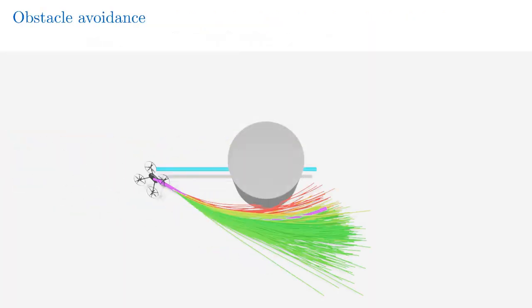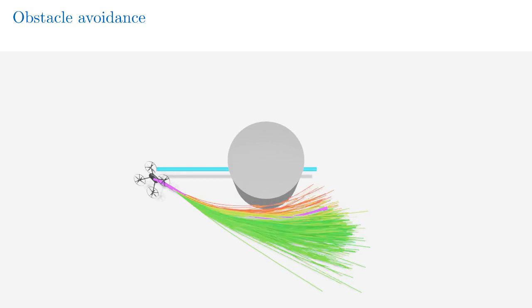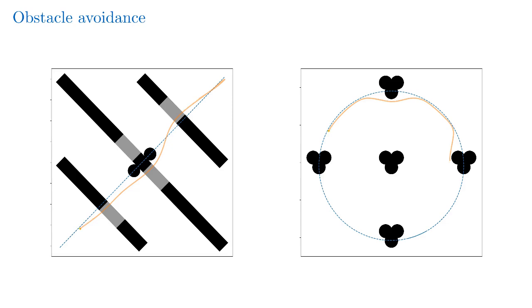The predictive approach allows us to greatly penalize trajectories resulting in collision, thereby avoiding obstacles even when the reference trajectory passes through them. This is demonstrated experimentally, tracking a reference at up to 44 kilometers per hour.